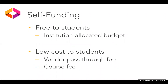Self-funding means that the institution is covering the cost, either by reallocating existing funds or by asking students to pay a fee. I've further divided these into options that would be free to students and options that would be low cost to students. Free to students is an institution-allocated budget. This could potentially be a budget line associated with student success, a budget line within the library, or any of many other places. It could also come from a single institution or from a university system or community college system. The risk with this type of funding is that it could change if budgets tighten or if priorities shift.